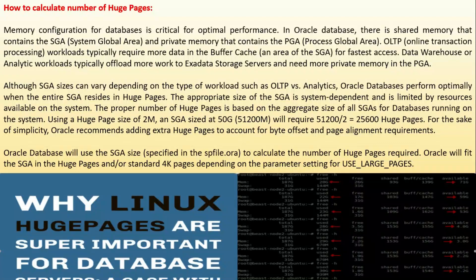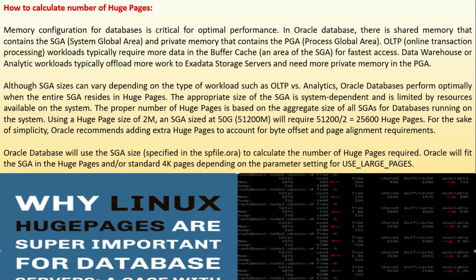The proper number of huge pages is based on the aggregate size of all SGAs of databases running on the system, using a huge page size of 2MB. An SGA size of 50GB will require 25,600 huge pages. For simplicity, Oracle recommends adding extra huge pages to account for byte offsets and page alignment requirements.